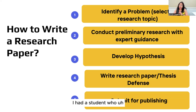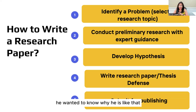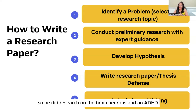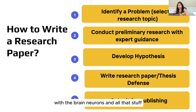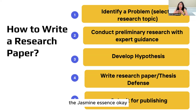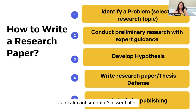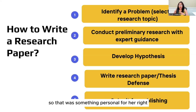I have many students who made it personal. I had a student who had ADHD and had to take Adderall, and he wanted to know why he is like that and what brain neurons made him that way - so he did research on brain neurons and ADHD and how the chemicals help with brain neurons. I had another student whose brother was autistic, so she wanted to explore if jasmine essential oil can calm autism by calming brain neurons.